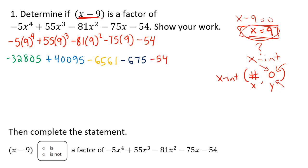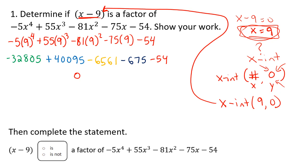Now I'm simply going to take these numbers and put them into my calculator: negative 32,805 plus 40,095 minus 6,561 minus 675 minus 54. And I get the number 0, which means I have an x-intercept at x equals 9.